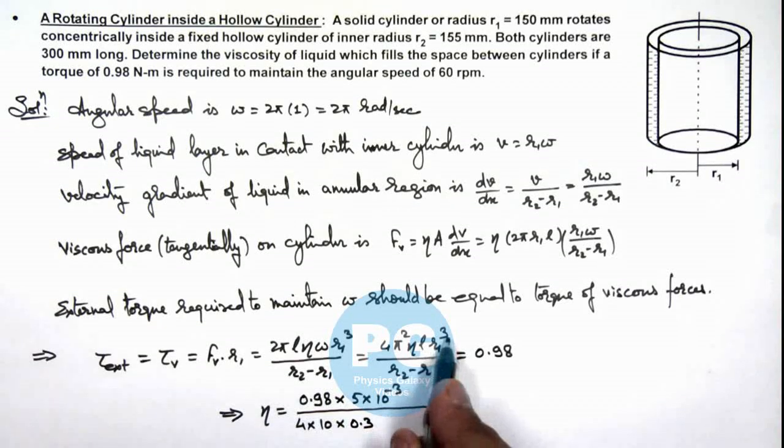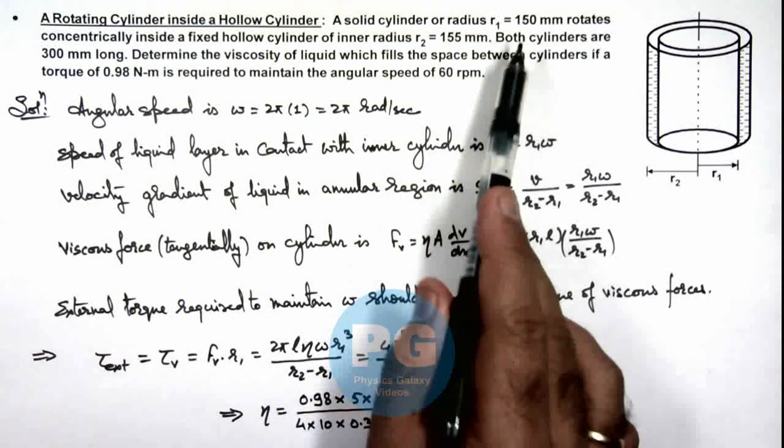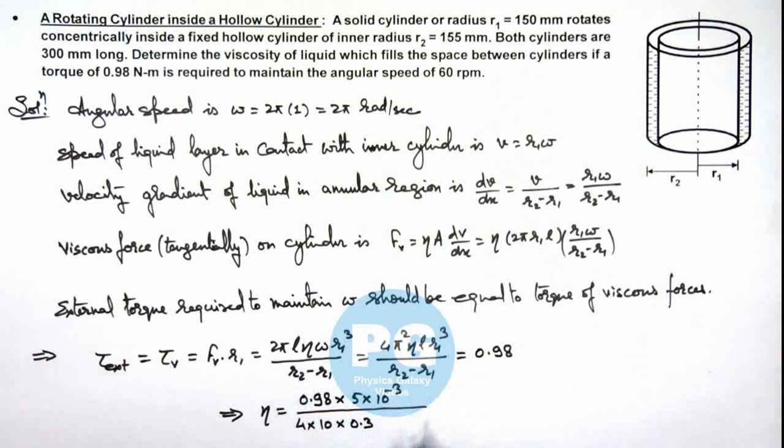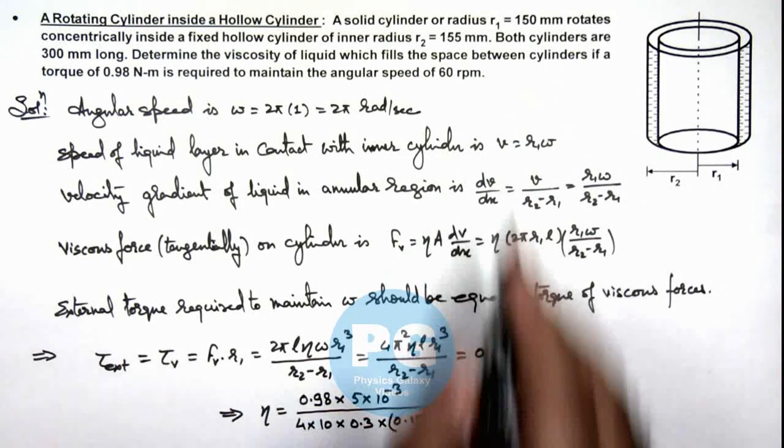And r1 cube we need to take, that is 5 × 10⁻³ mm is the radius. So we can consider r1 cube to be equal to 0.15 mm, so this multiplied by 10⁻³. Because this is 150 mm, so we can take the cube of 0.15, as this is 15 centimeter.